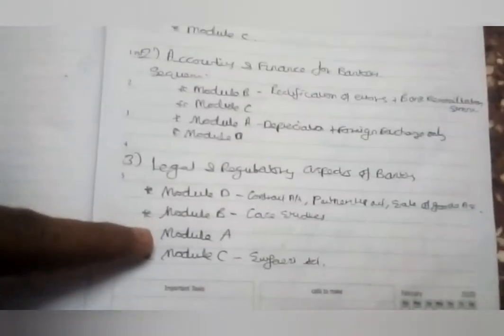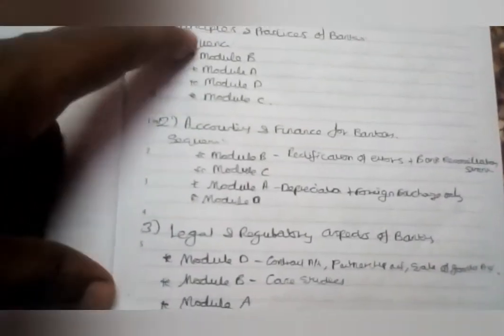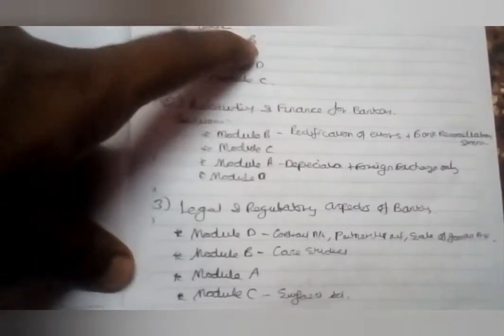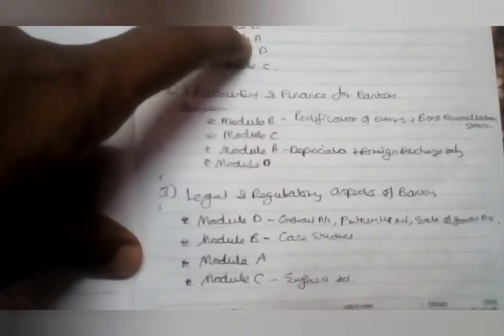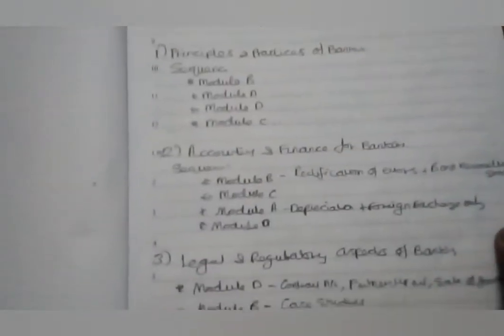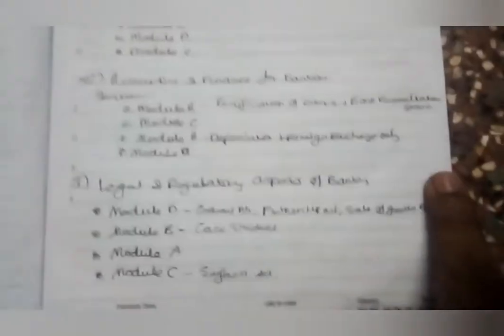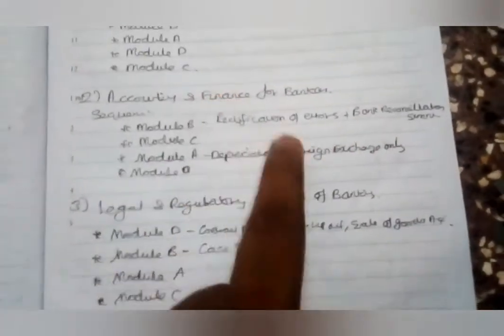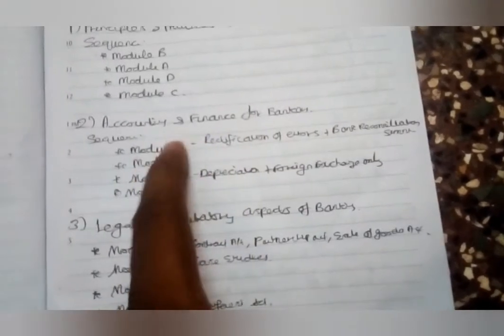Friends, in this three subjects, we have principles and practices, accounts, and legal. In this three chapters, we have a preference. This is the main one. If we study the preference, it is important to use Module B. If you use Module B, then you can omit or skip. That is the order.